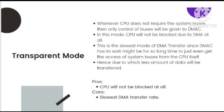Due to the wait time, less amount of data will be transferred. Transparent mode has some pros and cons. The pros: the CPU will not be blocked at all. The cons: it has the slowest DMA transfer rate.